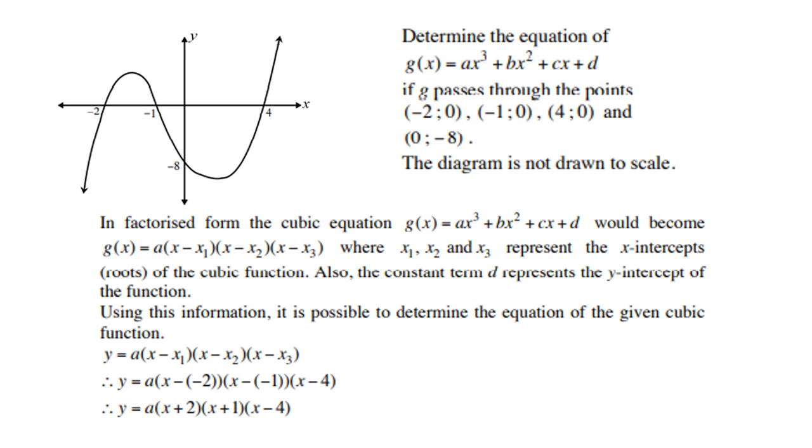Therefore, three different x-intercepts, then you must use the form g(x) = a(x - x₁)(x - x₂)(x - x₃). So x₁ will be -2, x₂ will be -1, and x₃ will be 4. But remember, opposite signs, so the -2 will become x + 2, the -1 becomes x + 1, and the positive 4 becomes x - 4. Please don't forget to write down the x-values with the opposite sign.